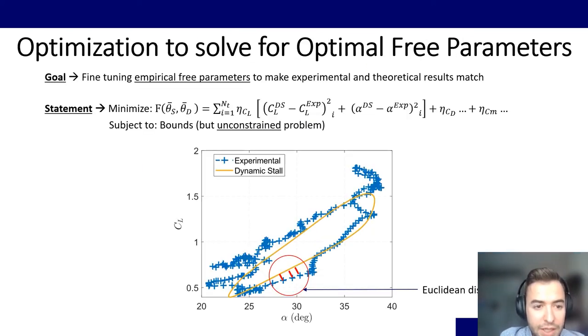Then for the fine tuning of the empirical free parameters we proposed an optimization with the objective of minimizing this cost function, which sums all the Euclidean distances between the experimental points and the numerical points. So in the end the objective is to minimize all these distances to make both curves match.